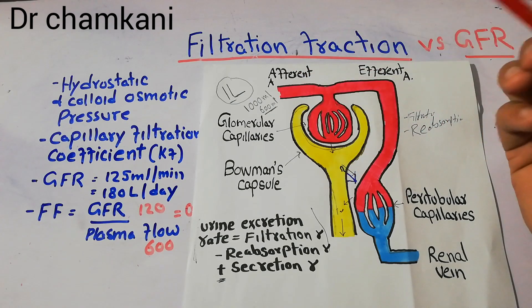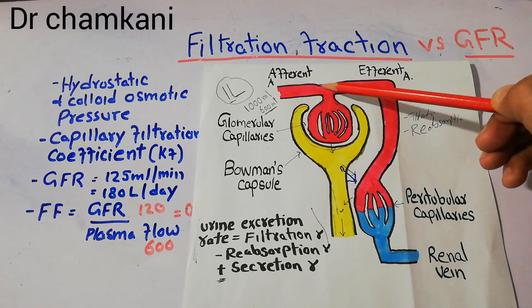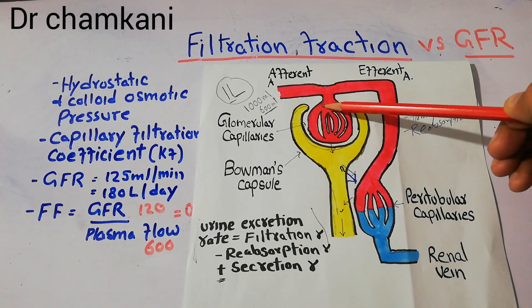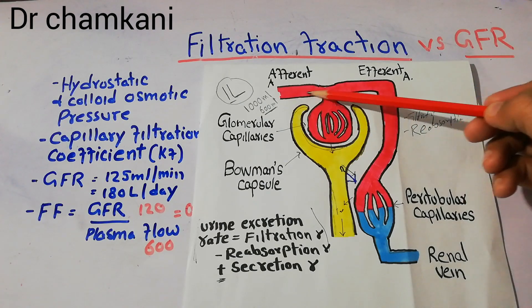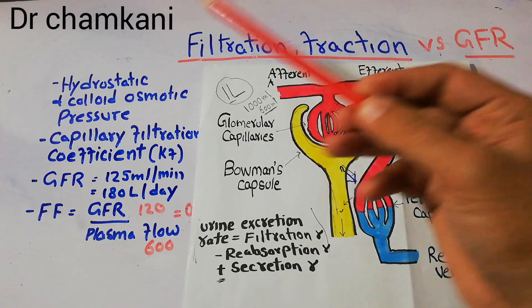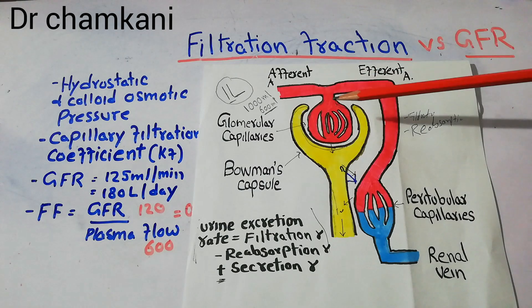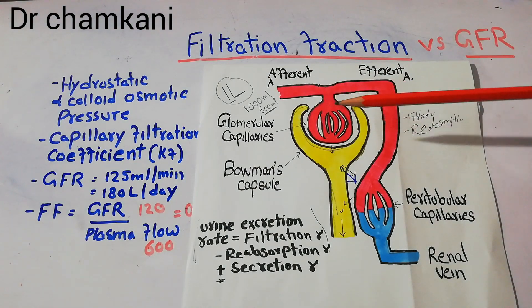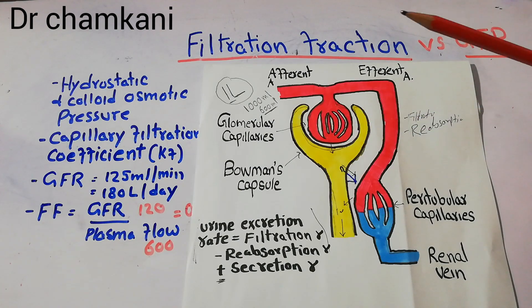Filtration occurs because the renal arteries keep dividing, and at the level of the nephron, the afferent arteriole brings blood into the glomerulus. The glomerulus is basically a bunch of capillaries, and inside those capillaries there is high pressure of blood. That pressure is due to the hydrostatic and colloid osmotic pressure. These forces contribute to the filtration process occurring at the Bowman's capsule.